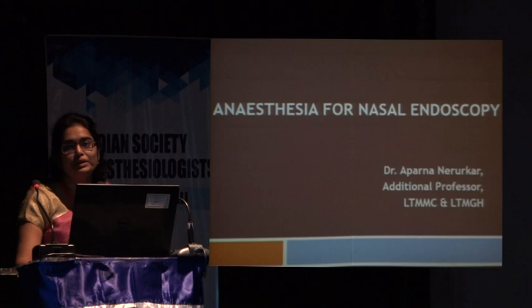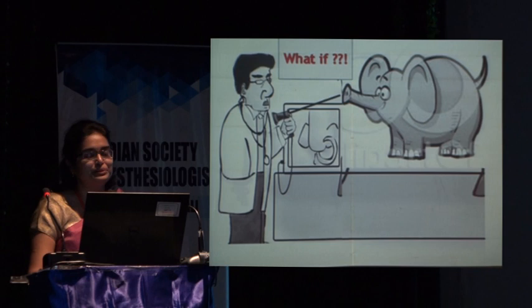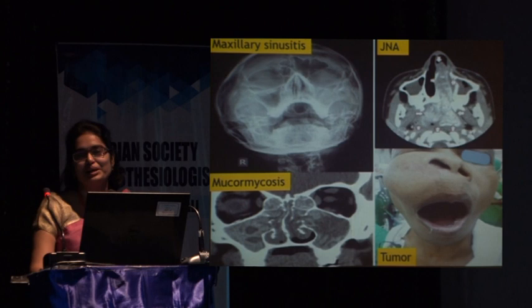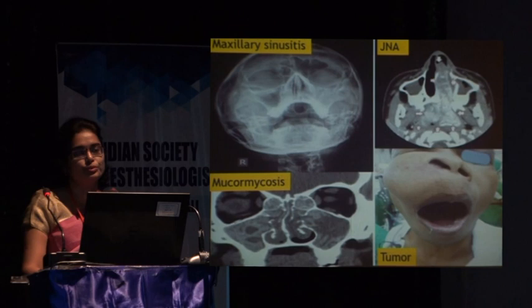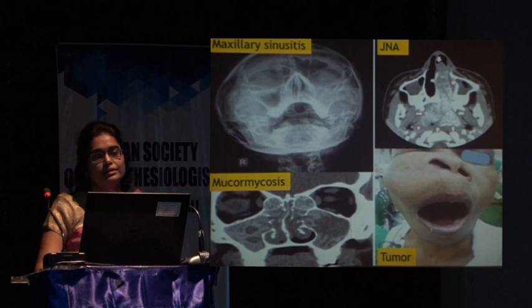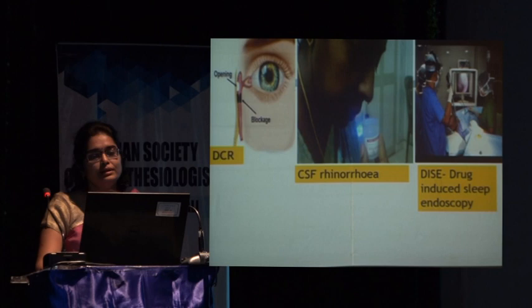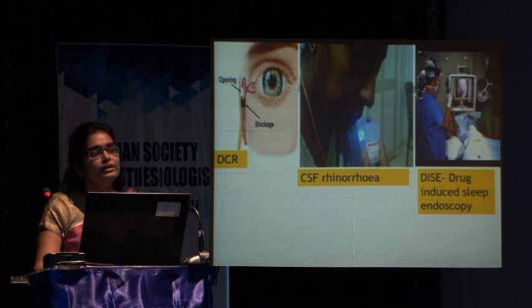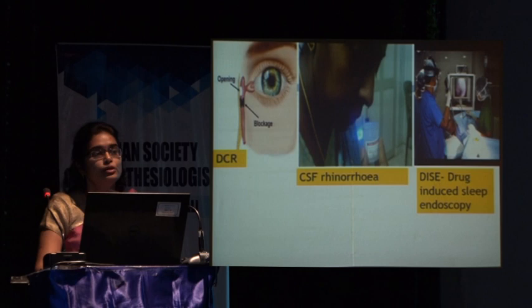I'll be speaking on anesthesia for nasal endoscopy. As I was preparing for this topic, I suddenly woke up with a nightmare — what if I had to give anesthesia to this? Then I woke up properly and realized, no, these are my patients. So these are the usual patients that come for nasal endoscopy: maxillary sinusitis and polyposis, mucormycosis in diabetic patients, tumors for biopsies and excisions, JNAs, endoscopic excision of JNAs which are done quite a lot in our institute. Others are DCR, treatment of CSF rhinorrhea, and the latest, drug-induced sleep endoscopy, which is done for diagnosis of obstructive sleep apnea.